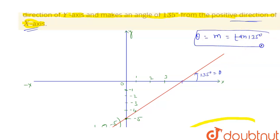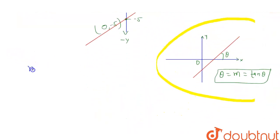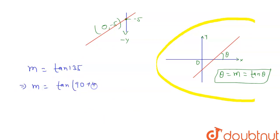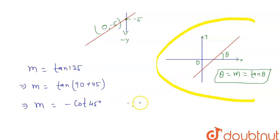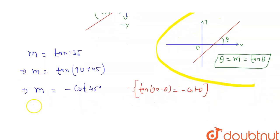So m = tan(135°), which is tan(90° + 45°). Using the identity tan(90° + theta) = -cot(theta), this gives m = -cot(45°). Since cot(45°) = 1, we get m = -1. So the slope of this line is -1.